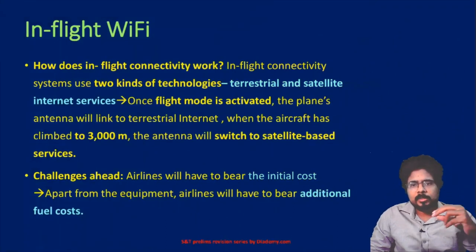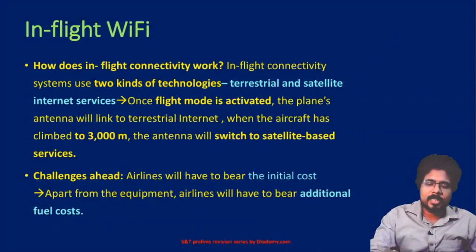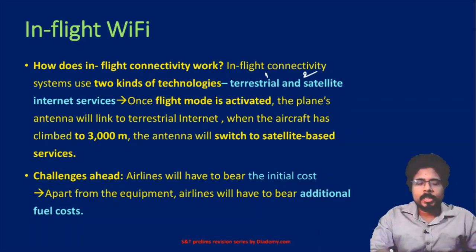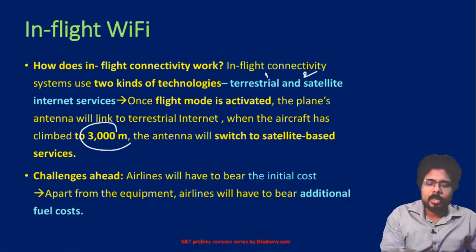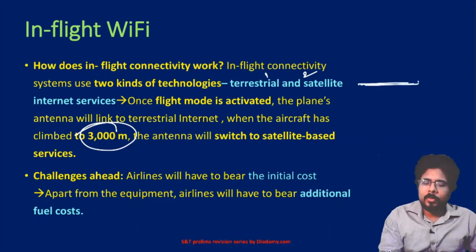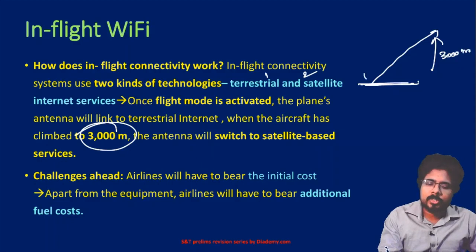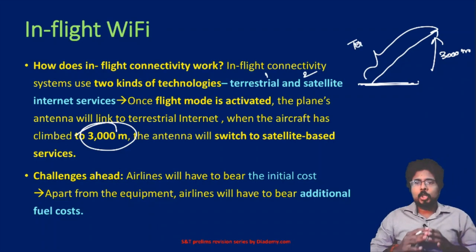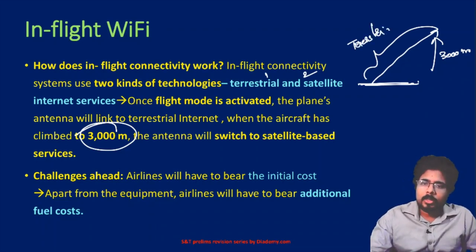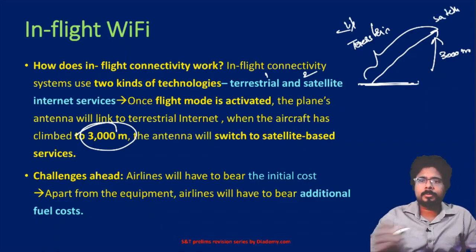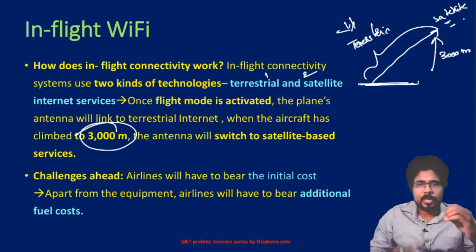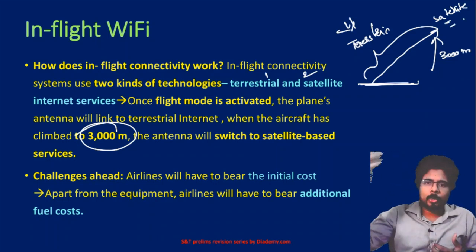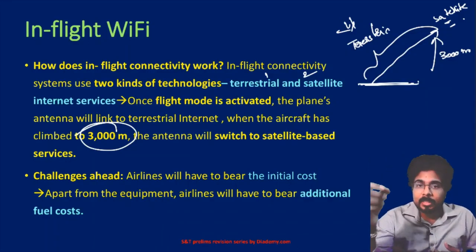How does in-flight Wi-Fi work? It works in two stages. The first stage is terrestrial connectivity and the second stage is satellite connectivity. Through terrestrial connectivity you will be able to use the internet till the flight reaches 3,000 meters height. From takeoff up to 3 kilometers, you will be using the terrestrial network provided by various network operators. After crossing 3,000 meters, you will be using the satellite network.